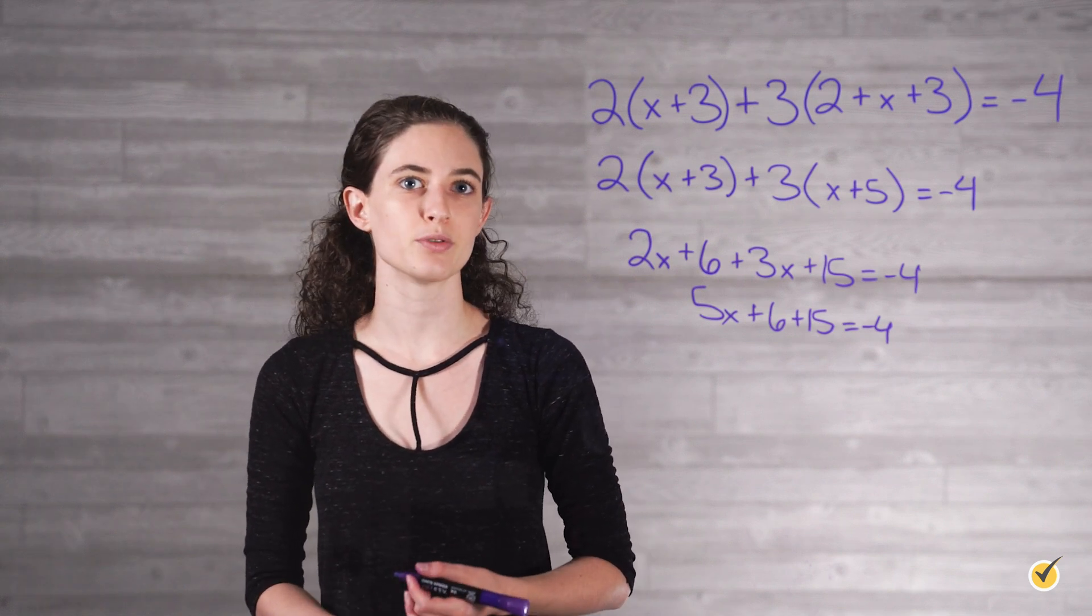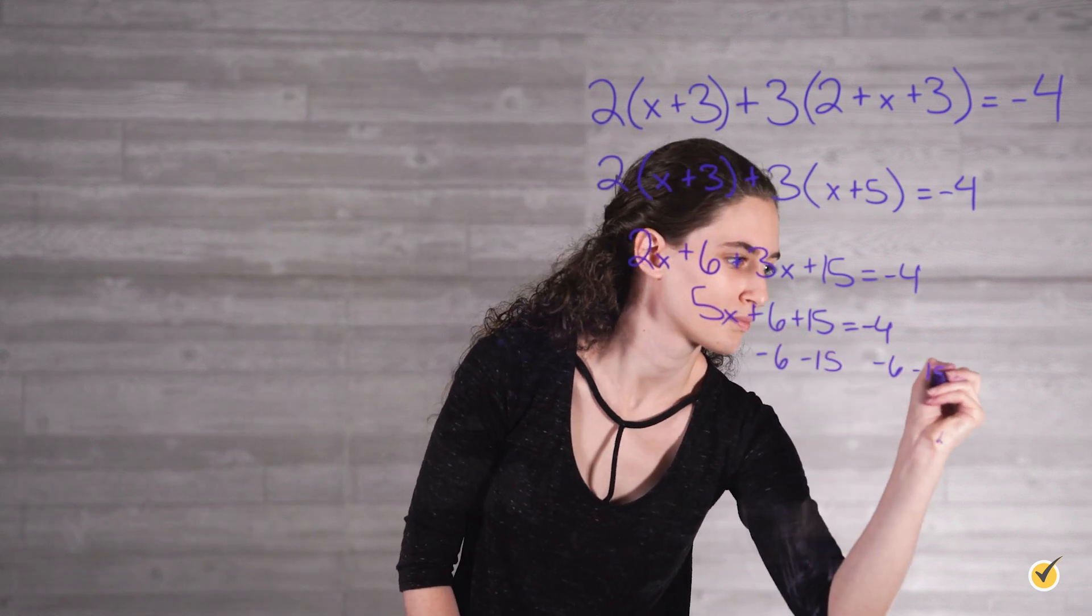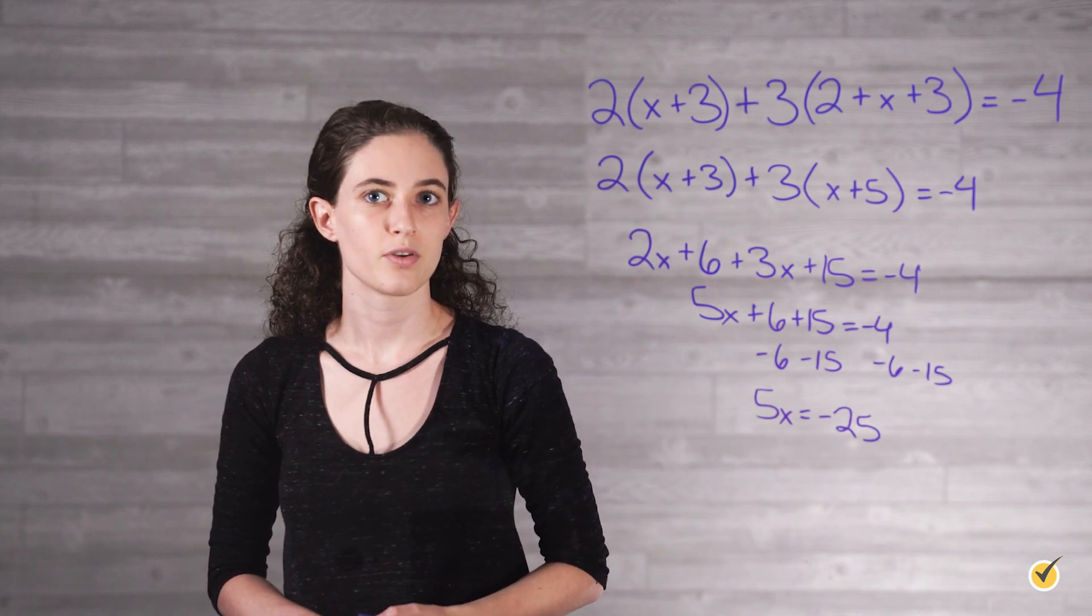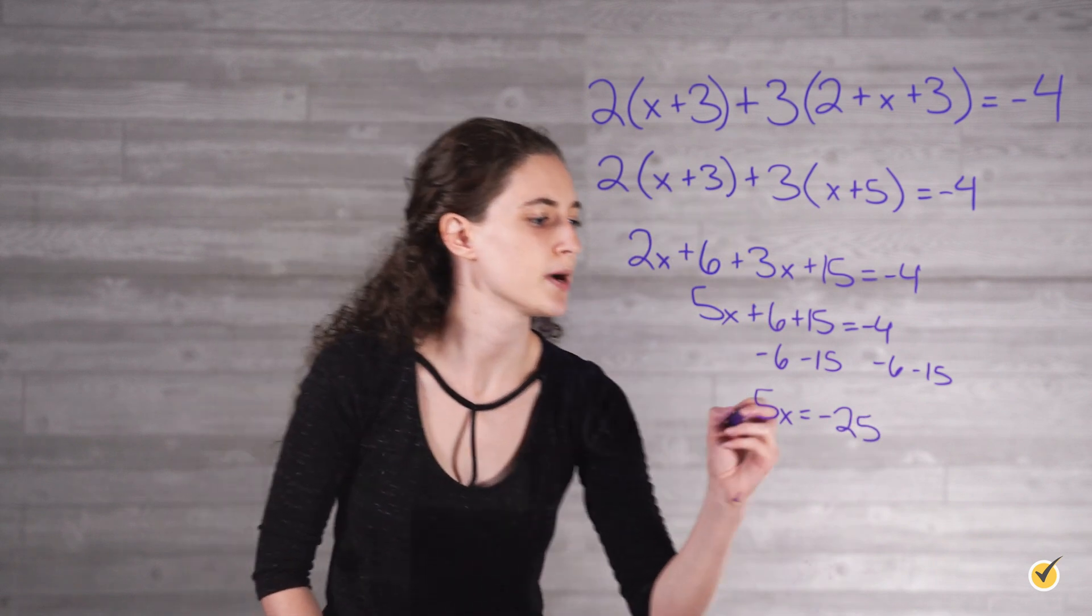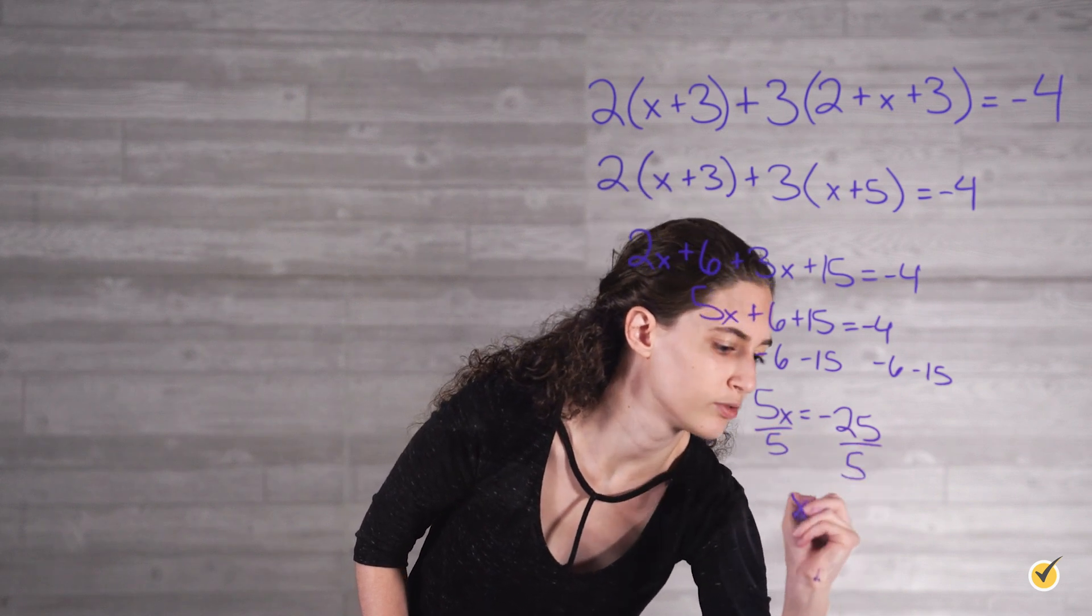Subtracting 6 and 15 from both sides of the equation will give us 5x equals negative 25, which simplifies further by dividing by 5 on both sides: x equals negative 5.